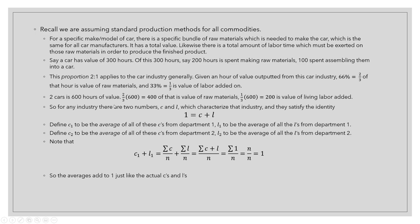These are constants of technology. They'll change if the technological composition of the car industry changes, but they don't change when the actual amount of value changes — and that's exactly what we were after. For any industry at all, there are two numbers C and L which characterize that industry technologically, and they satisfy the identity that C plus L equals one. So one hour from the car industry breaks down into two-thirds value of raw materials and one-third value of labor.